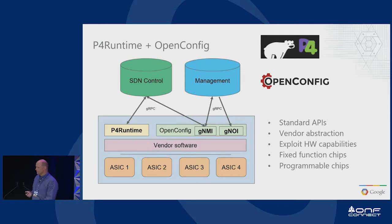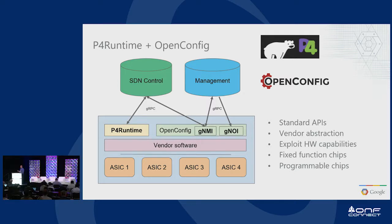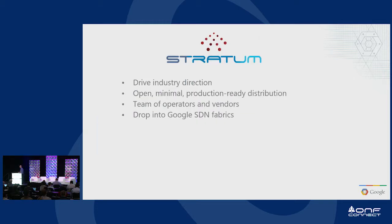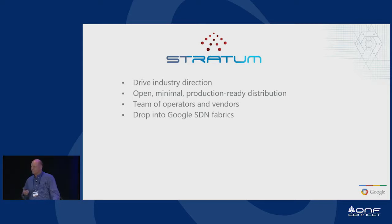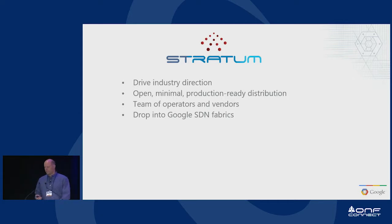The other half of this is OpenConfig. We adopted that — it was moving along just fine on its own. If we can define exactly the models we need for configuration, monitoring, and telemetry out of a standard box, that will give us the APIs that are needed. This could have been something completely proprietary to us, but that doesn't really solve the problem — we want to be able to go out and buy this. So we partnered with the ONF and started the Stratum project to make an open and minimal production-ready distribution.